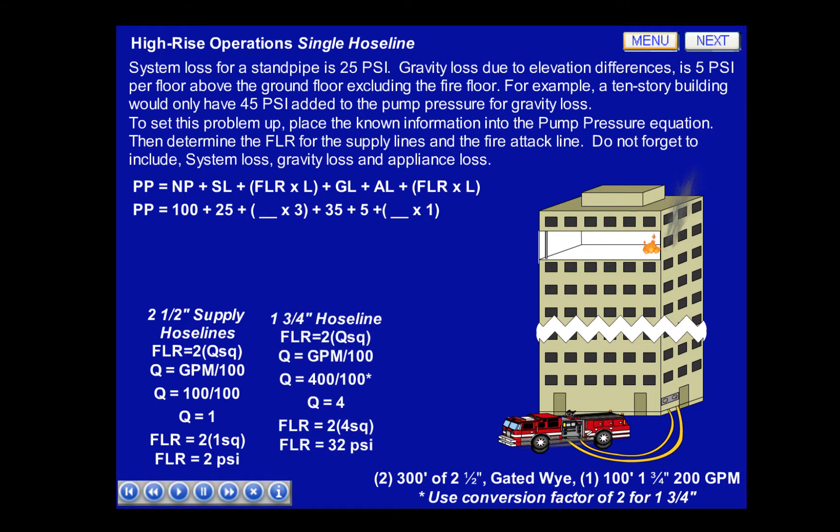To determine the friction loss rate for the inch and three-quarter hose line, we'll use FLR equals 2Q squared. Q equals GPM divided by 100, and in this case 400 GPM will be used because we multiply 200 times 2, the conversion factor for inch and three-quarter hose. So Q equals 4, then the friction loss rate equals 2 times 4 squared, or 32 PSI per 100 feet of hose.